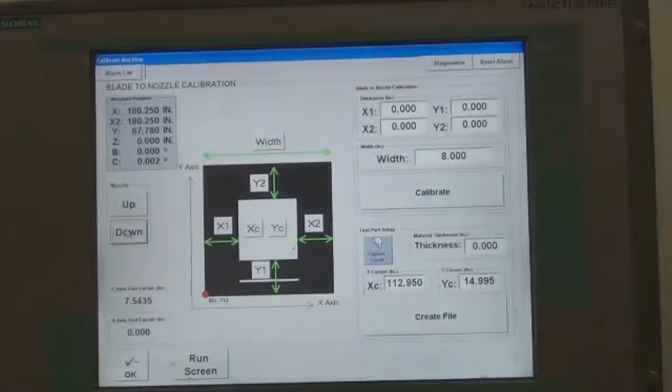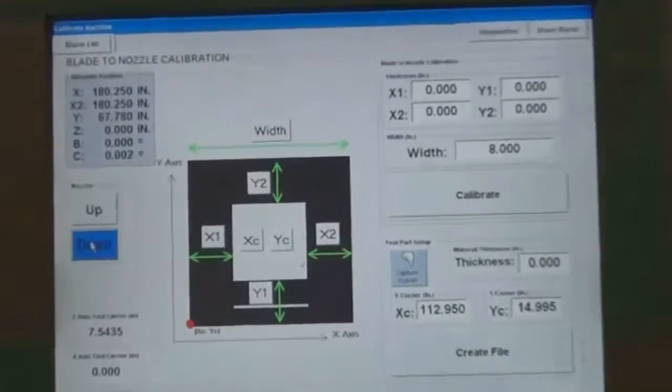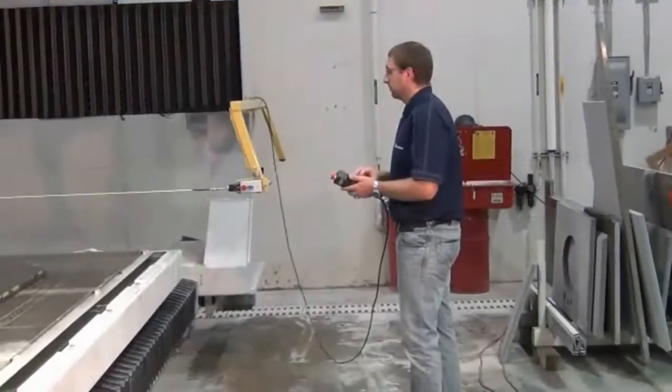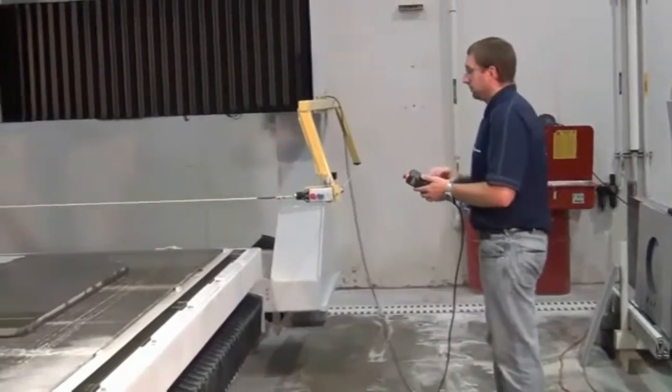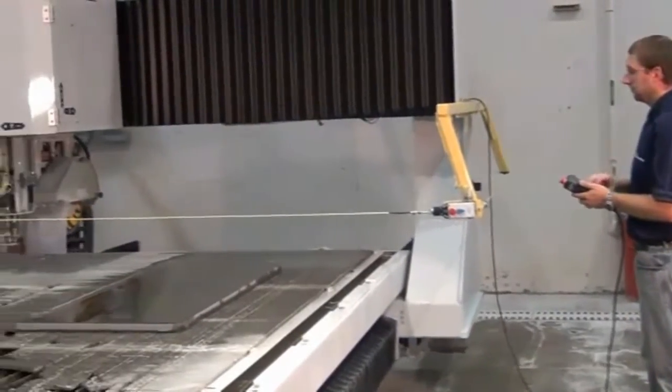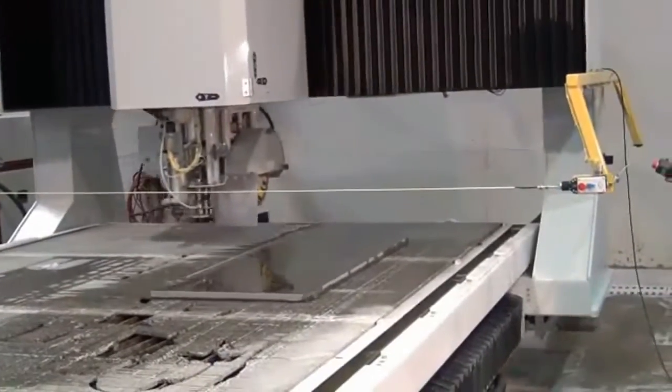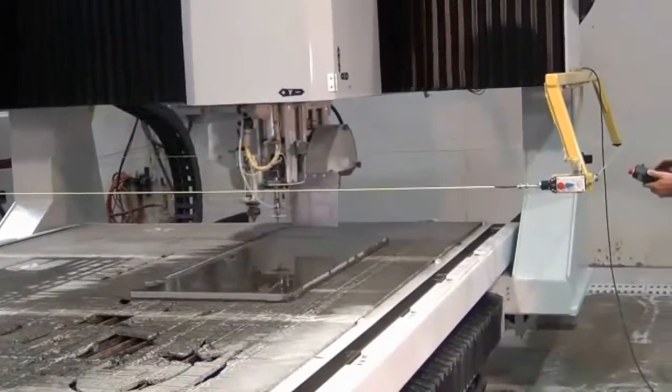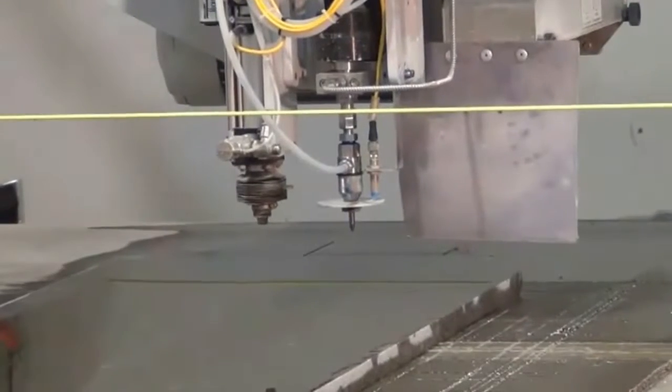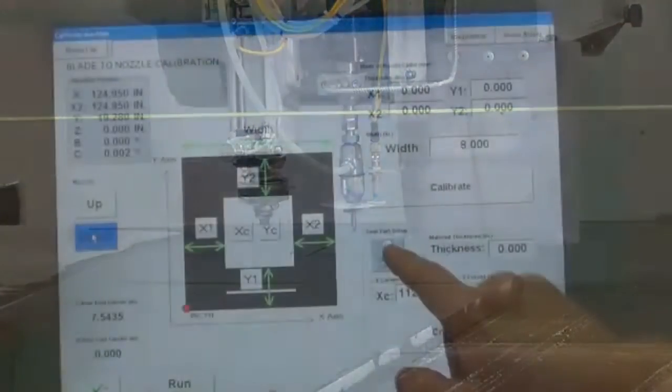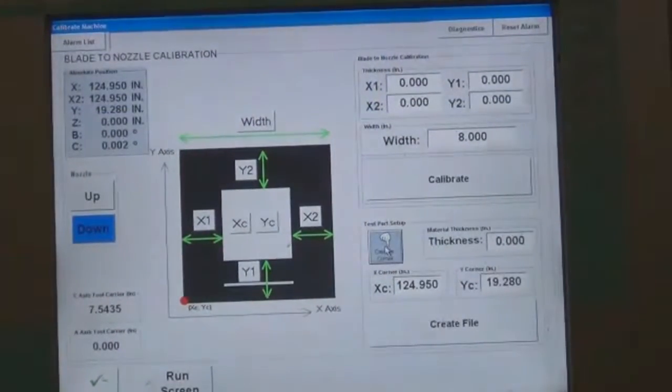Press the Down button to bring the nozzle down to just above the stone. Using the pendant, manually jog the machine until the nozzle is over the point where the bottom left corner of the test part will be located on the stone. Once the correct location is achieved, press the Capture Corner button to set the X Corner and Y Corner parameters.